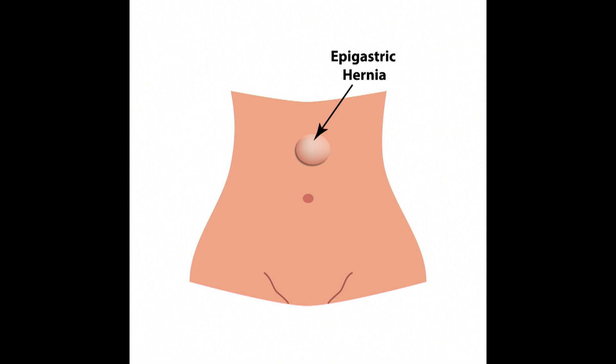An epigastric hernia is one the host was personally diagnosed with. It's a hernia usually above the belly button in the midline, also due to a weakness. It can be seen in patients who are very active with a lot of exercise. Sometimes these hernias are very small but they can be quite painful.